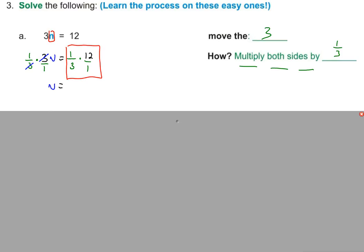On the right-hand side, what does that become? Well, how do you multiply fractions? Top times top, bottom times bottom. But we want to reduce before we multiply, so we can divide that 12 by that three and get a four. One times four is four. Four divided by one is four, and the answer is N equals four.